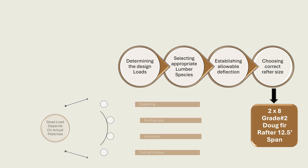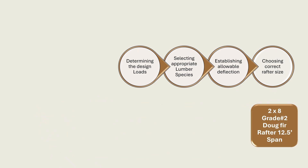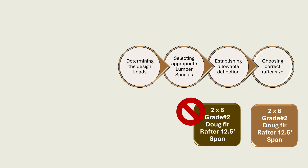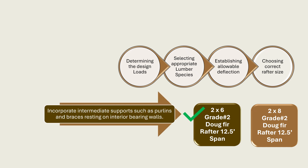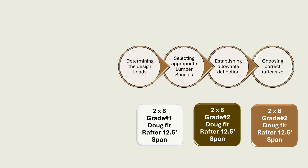Additionally, while 2x6 Douglas fir grade number 2 rafters are not acceptable spanning the full distance, it is entirely possible to use the same 2x6 rafters if we incorporate intermediate supports such as purlins and braces resting on interior bearing walls. We could also use 2x6 Douglas fir grade number 1 rafters, which can span 12.5 feet, but these may be more expensive due to the higher grade. These variations, and the judgment to apply them correctly, are essential parts of prescriptive residential design that go beyond the basic span tables.